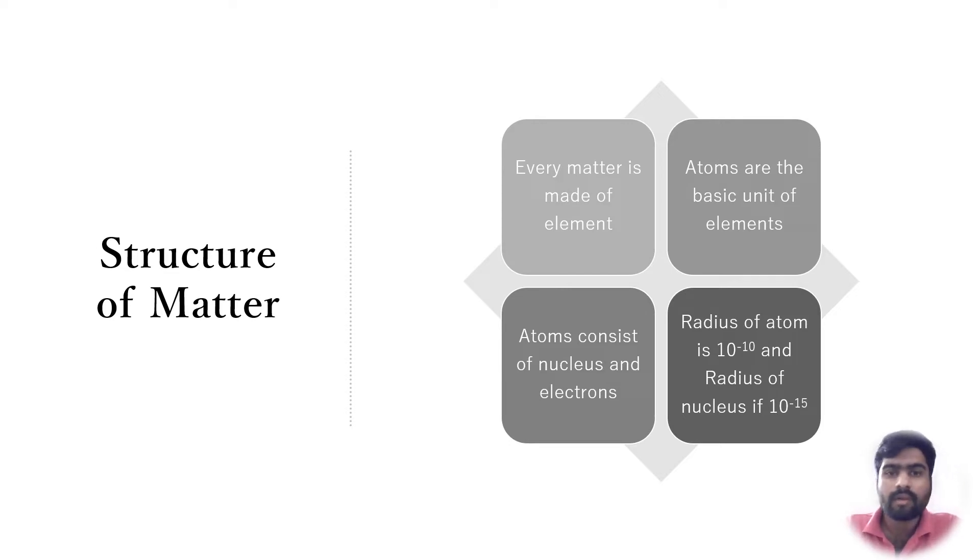It can now be divided into smaller components. Each atom consists of a small central core, the nucleus, where most of the atomic mass is located, and a surrounding cloud of electrons moving in orbits around the nucleus. The radius of the atom is approximately 10 to the power minus 10.